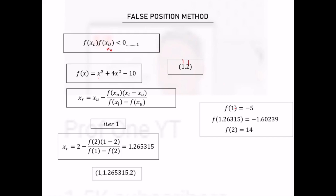To determine which interval to use for the next iteration, we check which pair of points satisfies the condition f(a) × f(b) < 0. Multiplying f(1) × f(1.26315) gives a negative value, and multiplying f(1.26315) × f(2) gives a positive value. Since we need a negative product, the root is within the interval 1.26315 to 2, not within 1 to 1.26315.